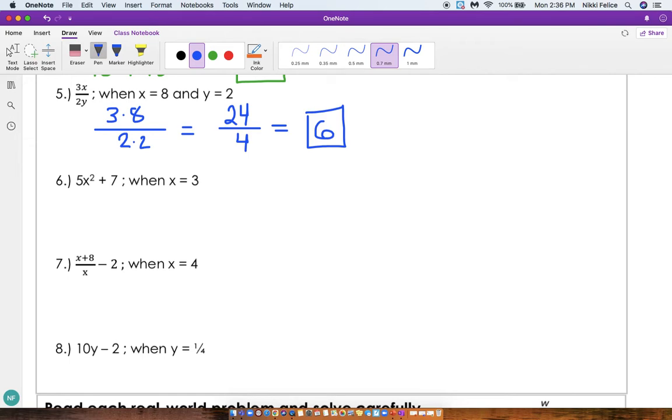Number 6: 5x squared plus 7 when x equals 3. So this is 5 times x squared, and my x we're using 3, so 3 squared plus 7. Now it's important to remember that 3 squared means 3 times 3. What is 3 times 3? It is 9. We solve our exponent first because we follow the order of operations. So this is going to be 5 times 9 plus 7. We know that 5 times 9 is 45, and then we do 45 plus 7 to get 52.